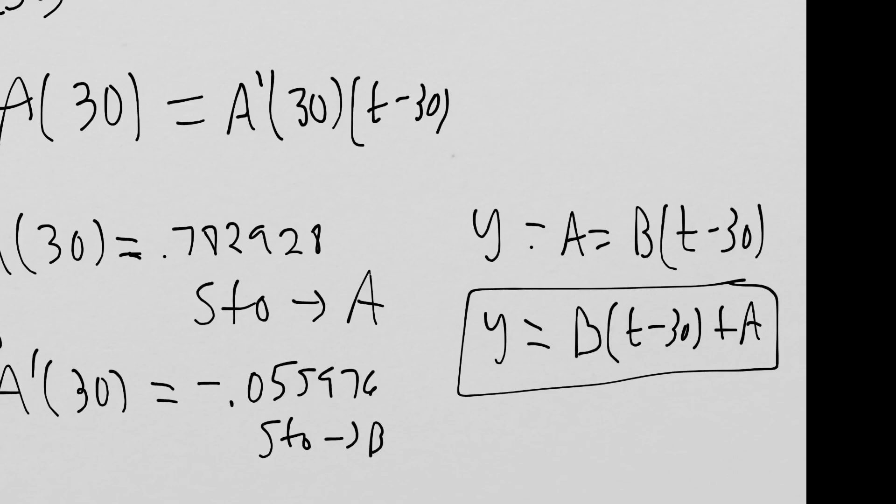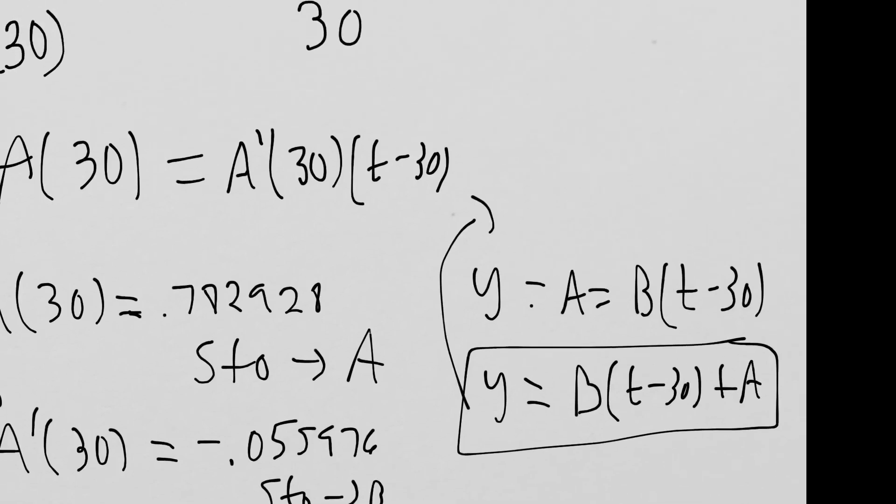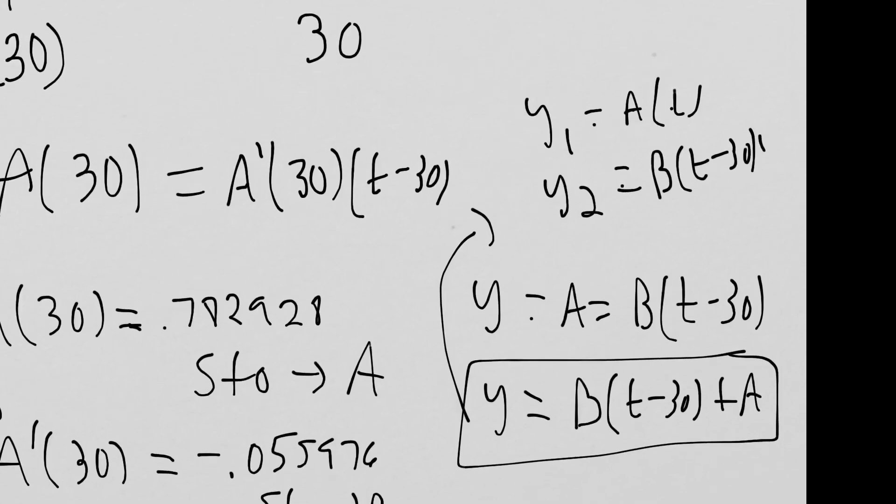Almost done. We already have our Y1 plugged in, that was our A function. Y2 was the average value from earlier, but we can just replace this now with our tangent line. Let's replace it with B times T minus 30 plus A.